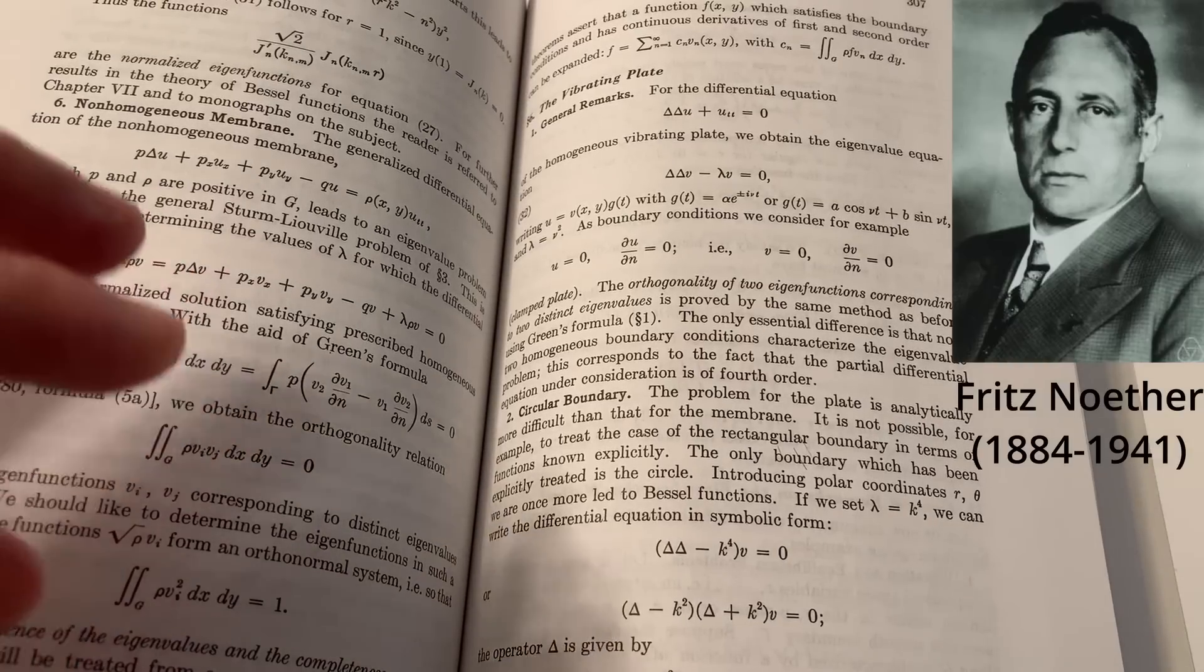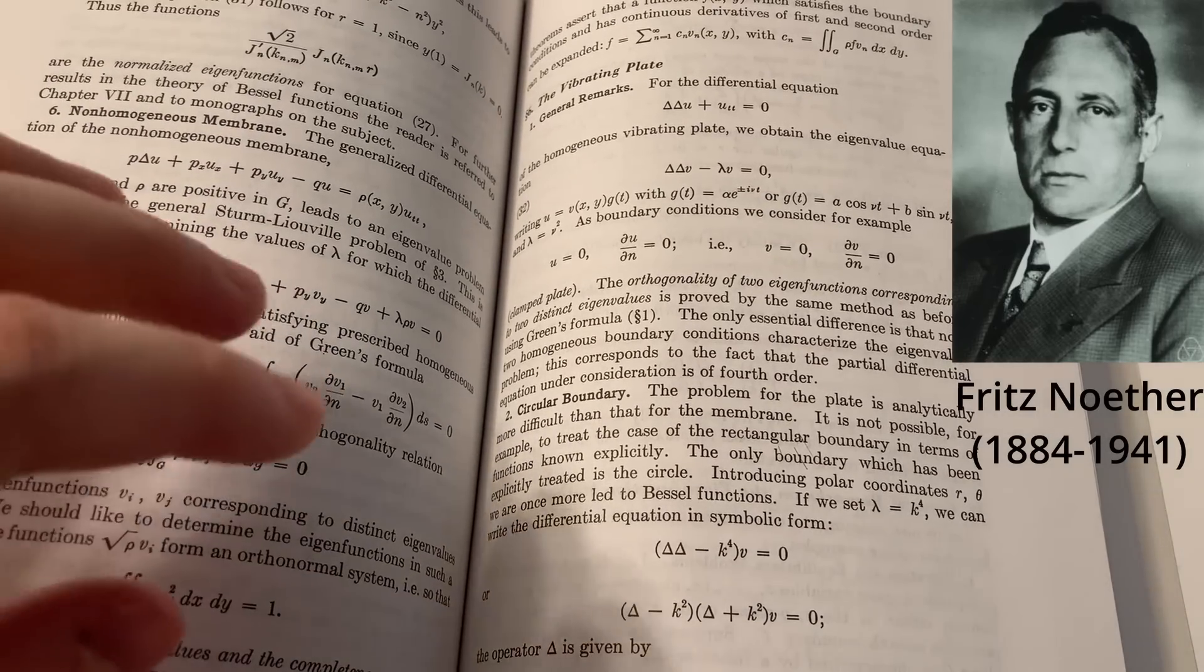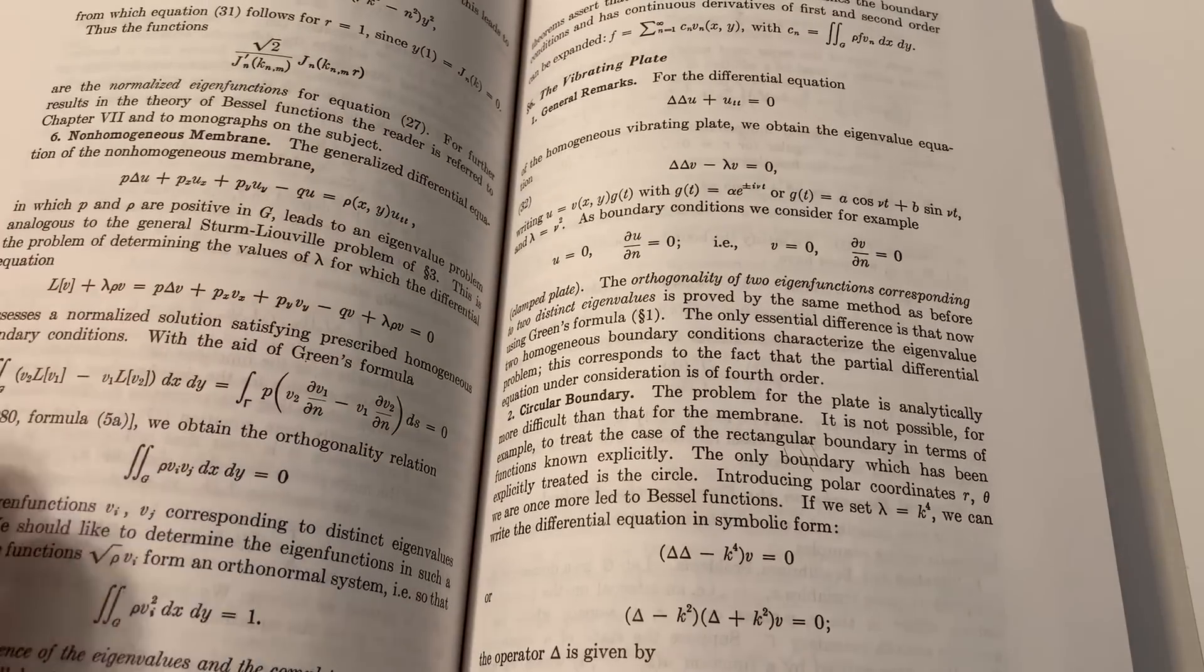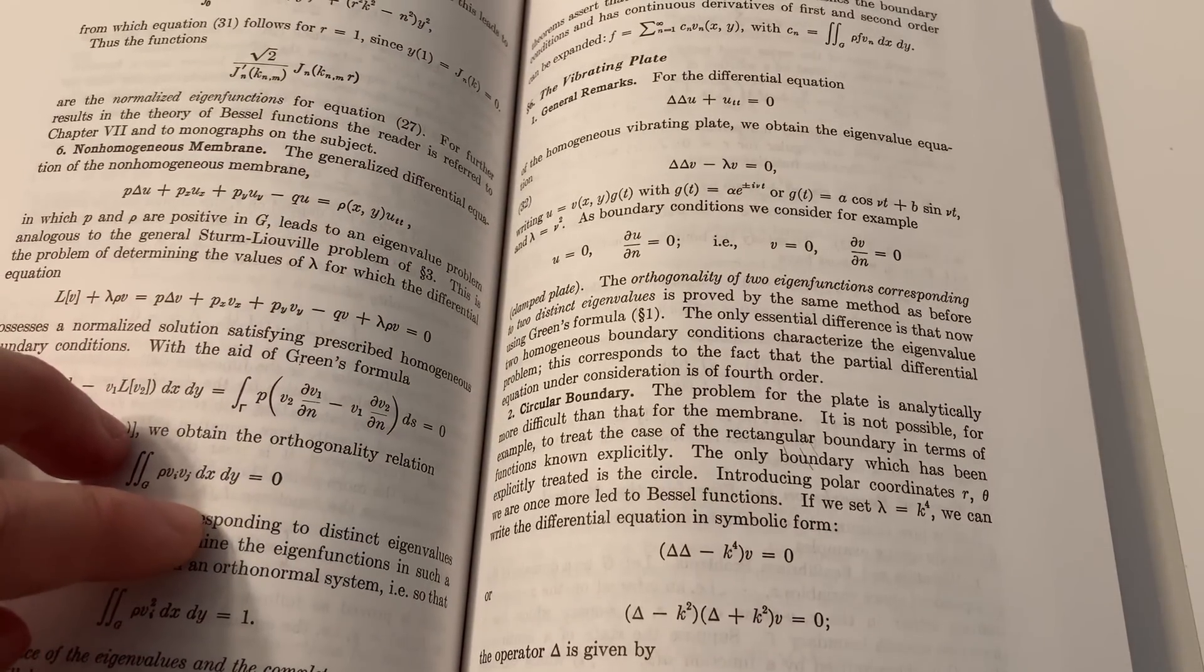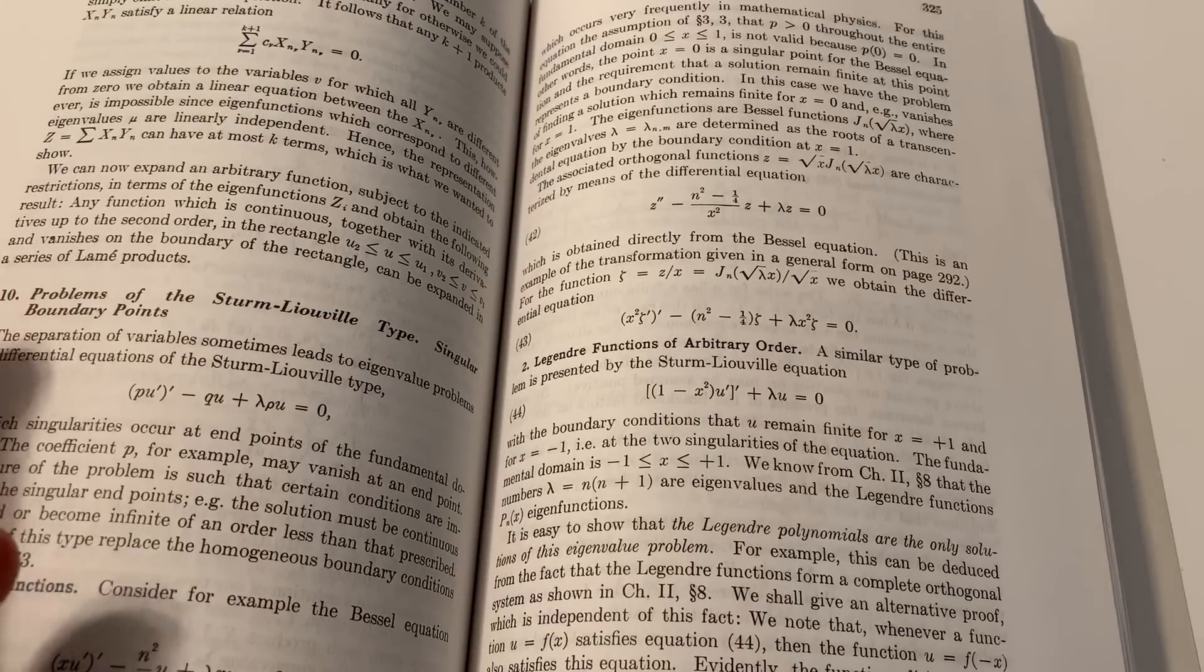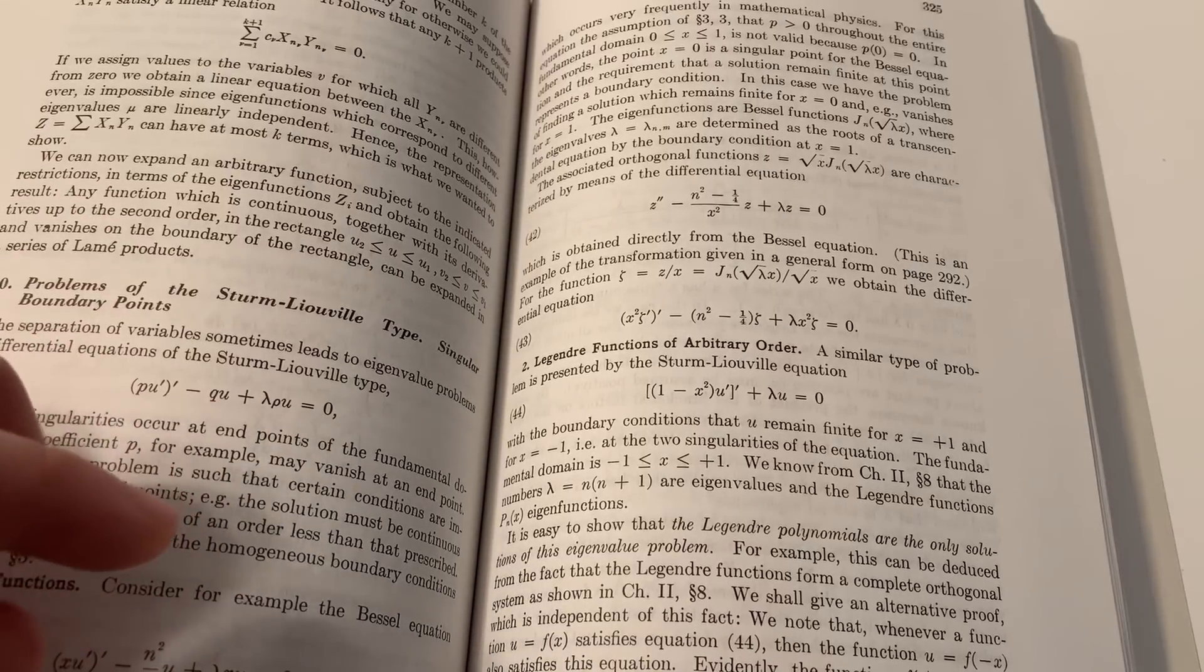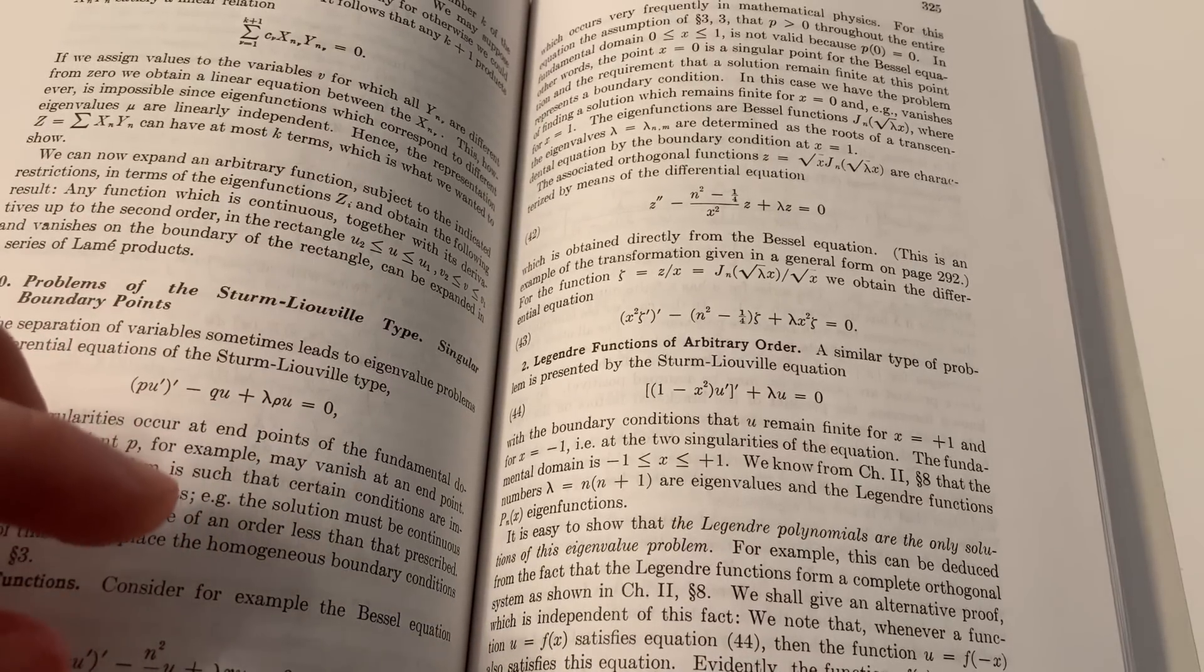Fritz Noether, who is Emmy Noether's brother, is another mathematician who worked in applied mathematics and theoretical mechanics. Fritz Noether was also forced to leave Germany, and he moved to the Soviet Union. But not long after, he was arrested by Stalin's secret police, and shortly after Germany's invasion of the USSR, he was executed.